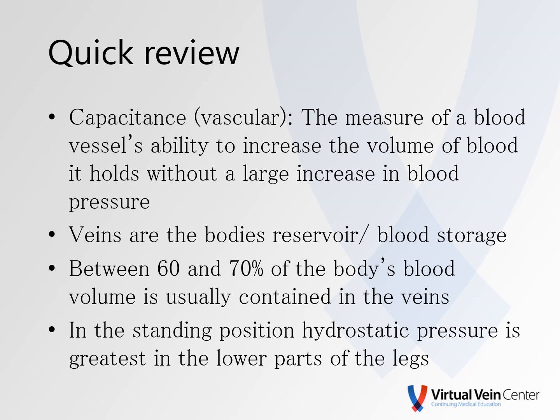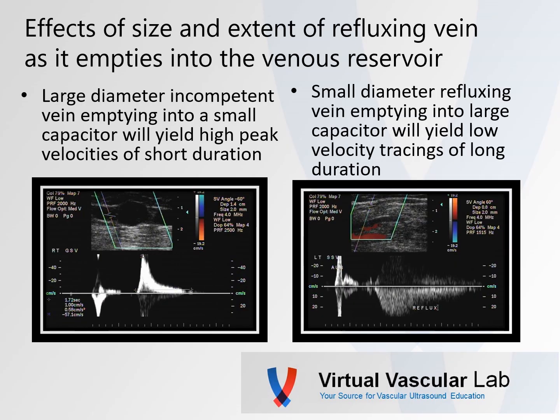Let's think about the effects of size and extent of reflux occurring in the vein as it empties into the venous reservoir. A large diameter incompetent vein emptying into a small capacitor or small vein will yield a high peak velocity with short duration, versus a small diameter refluxing vein emptying into a large capacitor or vein, which will yield a low velocity tracing of long duration.